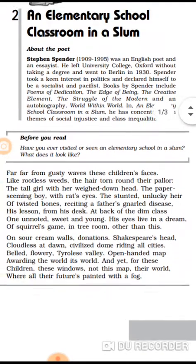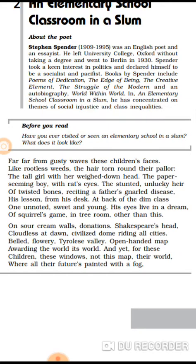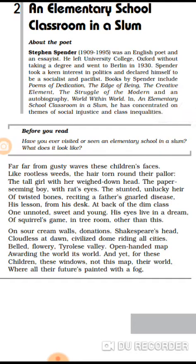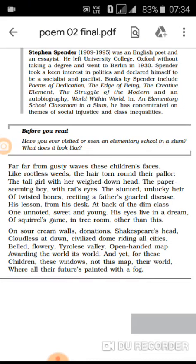We will study this poem in two parts. The first part begins: 'Far far from gusty waves, these children's faces like rootless beads, the hair torn around their pallor.' This poem starts with alliteration — 'far far from' has three F's, the repetition of the same letter. Then there is also a simile: 'these children's faces like rootless beads.'